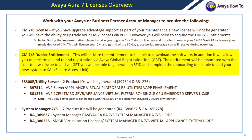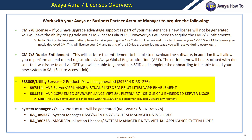The entitlement will be associated with the sole tool it was issued to, and via GRT you will be able to generate an SEID and complete the onboarding to add your new system to SAO. For your S8300E utility server, when licenses are generated, two product IDs will be generated: 397514 for your utility server license and entitlement, and 381276 for your AVP server license and entitlement.